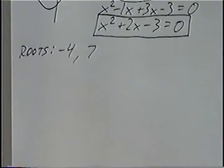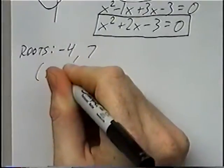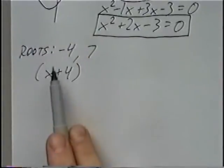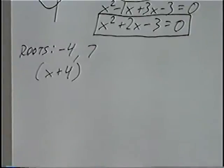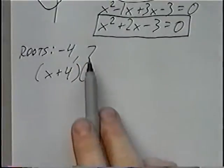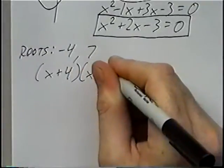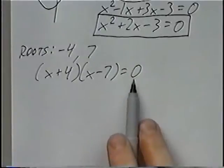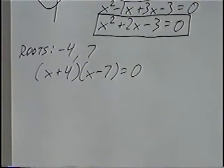Solving, if one root is negative 4, one factor has to be x plus 4. Because if you plug negative 4 in, this gives us 0, which is an answer to the quadratic equation. The second factor: since the second root is negative 7, we do the opposite, which will be x minus 7. We set this equal to 0 since we have these solutions for the quadratic equations.